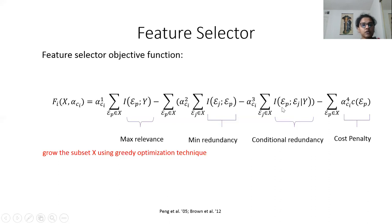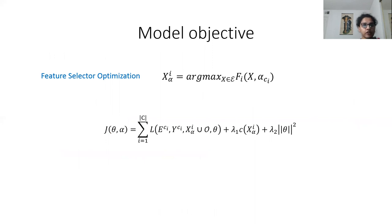We use a greedy forward selection technique where we start with an empty subset and at each point evaluate the feature with maximum gain and add it to the subset. The feature selector optimization function maximizes this objective function, and once the feature subset for cluster i is identified, we use this along with observed features in the loss function to update the classifier parameter theta.